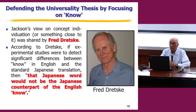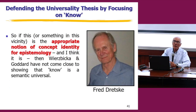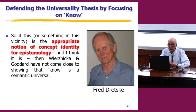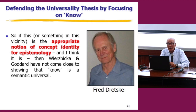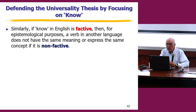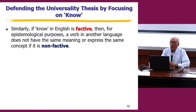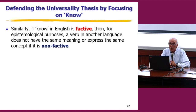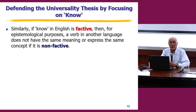Jackson's necessary condition is hardly unique — it's shared by Fred Dretske, for example. According to Dretske, if experimental philosophy studies were to detect significant differences between 'know' in English and the standard Japanese translation, then that Japanese word would not be the Japanese counterpart of the English word 'know.' So if this or something in this vicinity is the appropriate notion of concept identity for epistemology — and I think it is — then Wierzbicka and Goddard haven't come even close to showing that 'know' is a semantic universal.